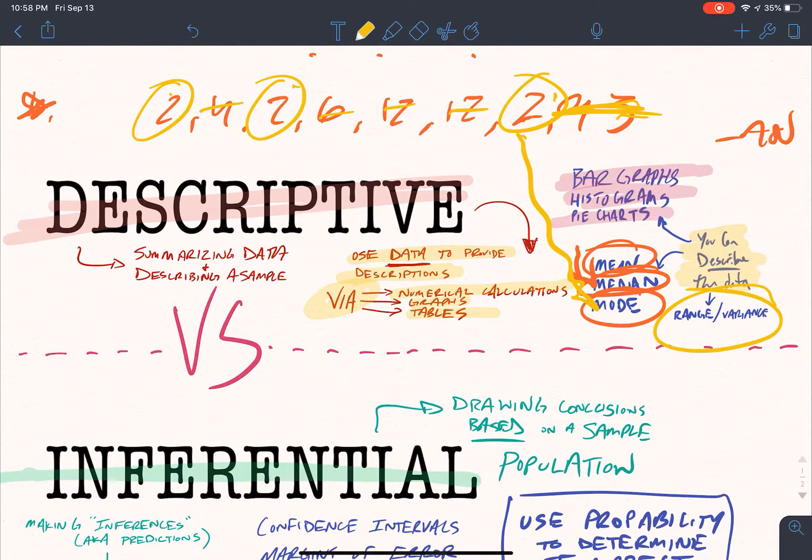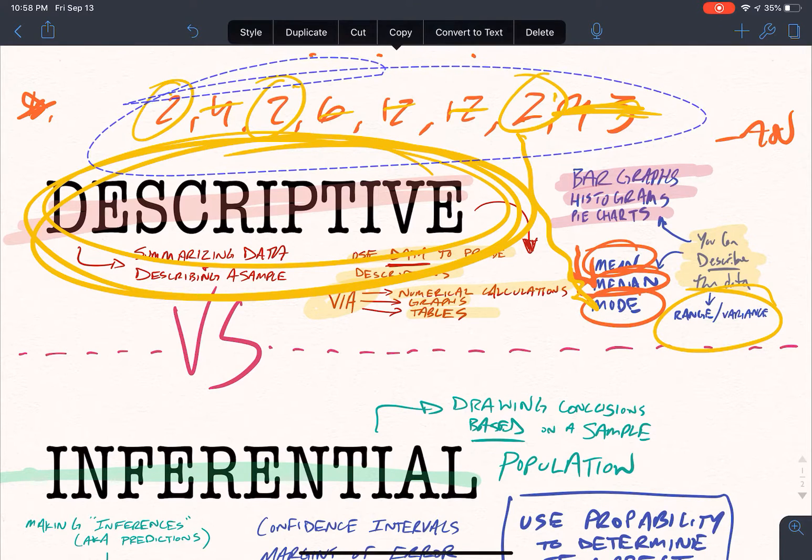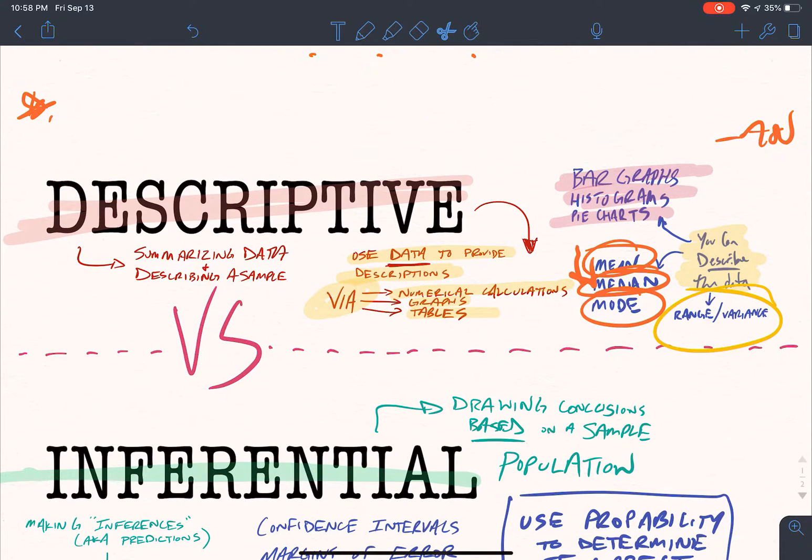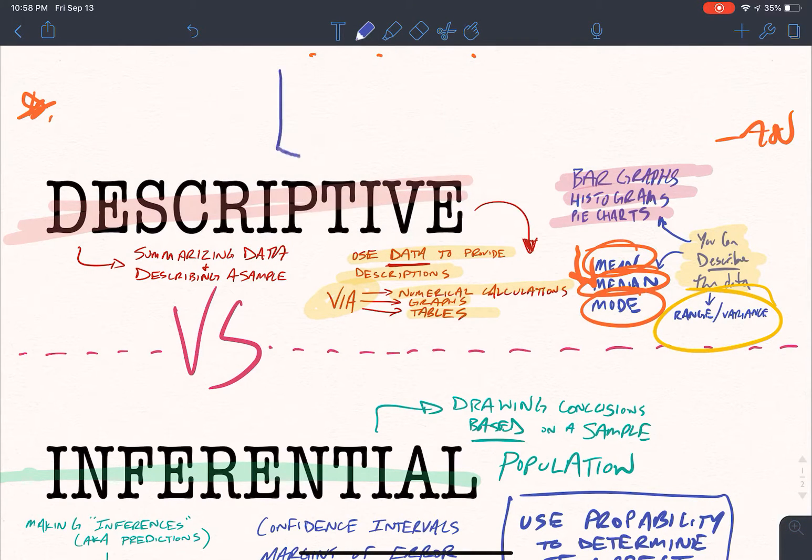Also range and variance. You're utilizing essentially the facts of what you have. It is very difficult to argue with descriptive statistics. You are describing what you see. You could even describe, let's say you were looking at you had a chart like this.